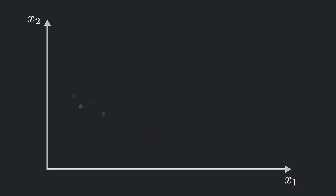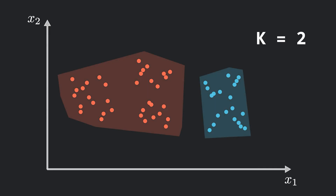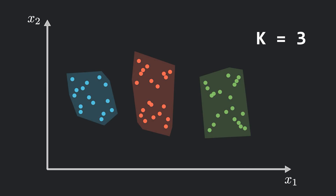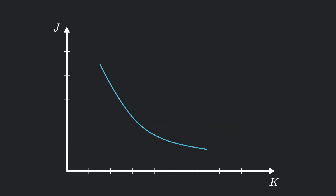Now the question is: how do we decide how many clusters we actually need? For example, if we set k=2, the data splits into two clusters; if we set k=3, it splits further; and for higher values of k, the clusters keep getting divided into smaller groups. One of the most widely used approaches to find a good value of k is the elbow method.